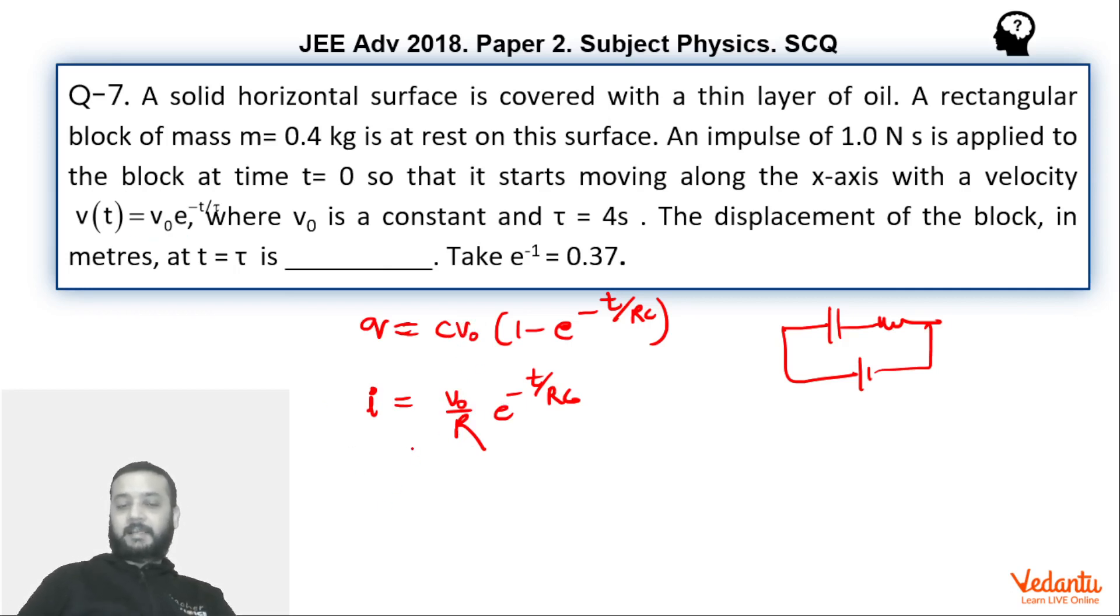Velocity is acting as the current and displacement is acting as the charge. Because i equals dq by dt and v is ds by dt. So we can say that if velocity function is given as 2.5 times e to power minus t by 4, so displacement function can be straightaway written as maximum 2.5 times 4 which is 10 times 1 minus e to power minus t by 4. This is the displacement function that we can write without integration.